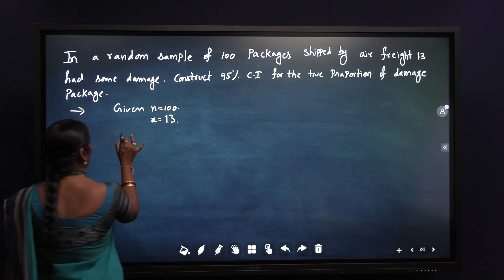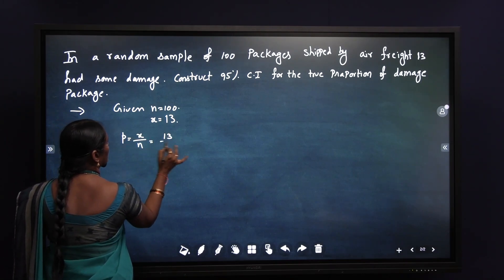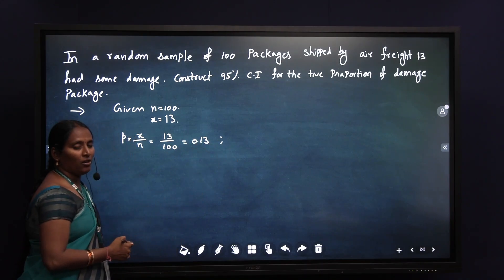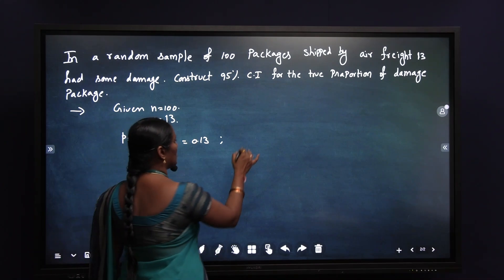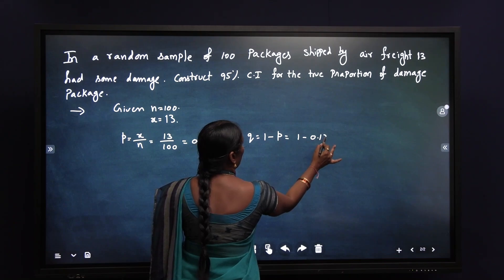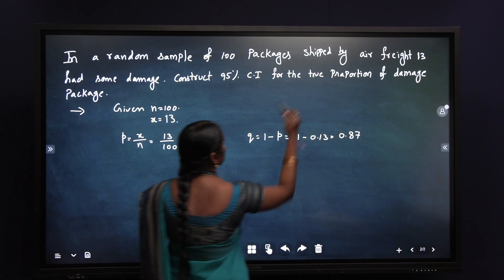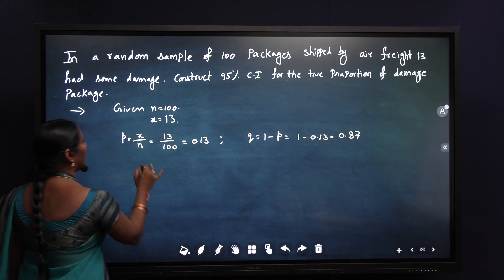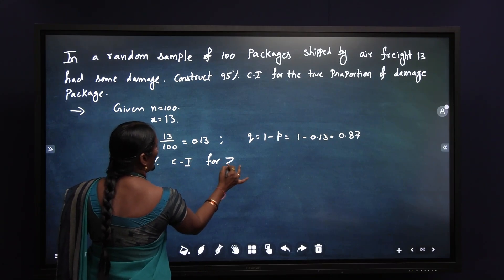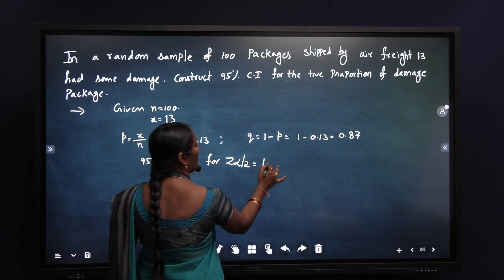We are going to find out p, which equals x by n — that is 13 by 100, which equals 0.13. When the value of p is 0.13, we know that p plus q equals 1, so q equals 1 minus p, which is 1 minus 0.13. The value of q is 0.87. For the 95% confidence interval, the corresponding z alpha by 2 value is 1.96.